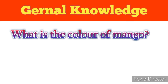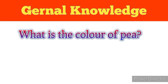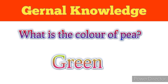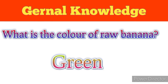What is the color of mango? Answer: yellow. What is the color of pea? Answer: green. What is the color of raw banana? Answer: green.